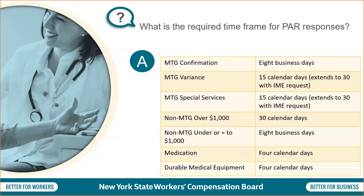What is the required time frame for PAR responses? Response requirements vary for certain PAR types. Responses for MTG confirmation are required within eight business days. MTG variance and MTG special services responses are required within 15 calendar days, but the response time is extended to 30 days if an IME is requested. Non-MTG over $1,000 responses are required within 30 calendar days. Non-MTG under or equal to $1,000 responses are required within eight business days, and medication and durable medical equipment responses are due within four calendar days.